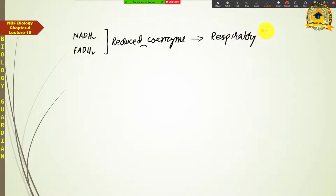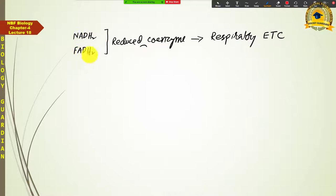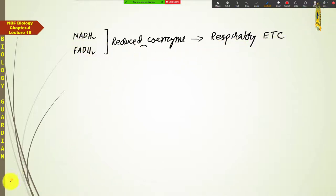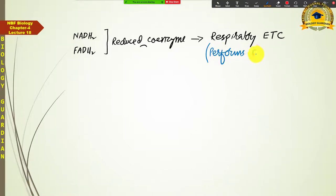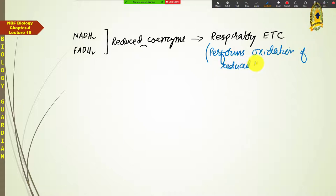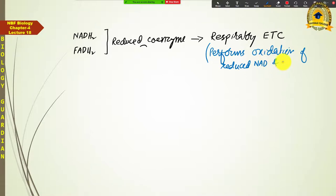In the last lecture we discussed the mechanism of the respiratory electron transport chain and its components — how NADH₂ and FADH₂ molecules come into the respiratory electron transport chain and get oxidized. This respiratory electron transport chain performs the oxidation of reduced NAD and FAD.